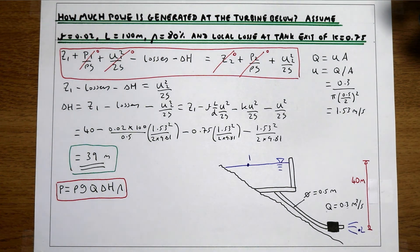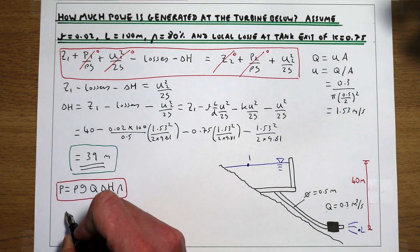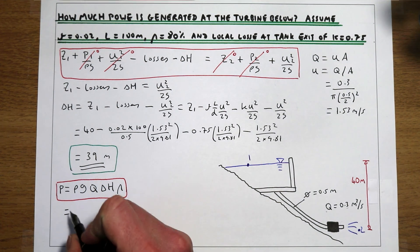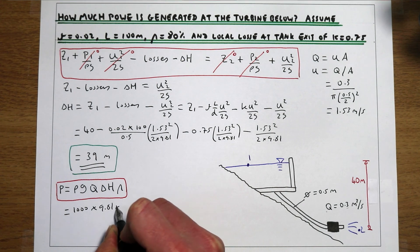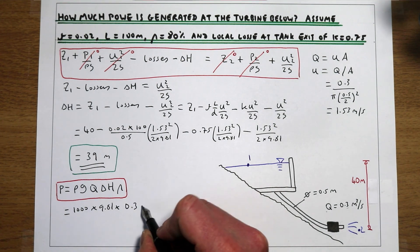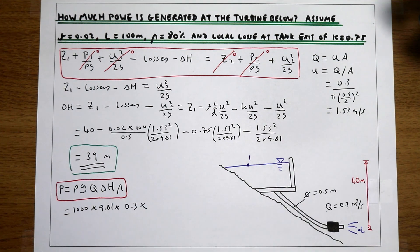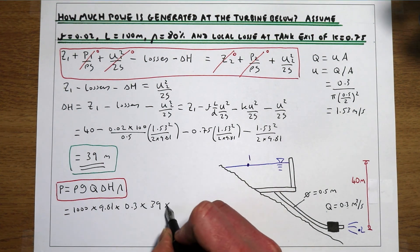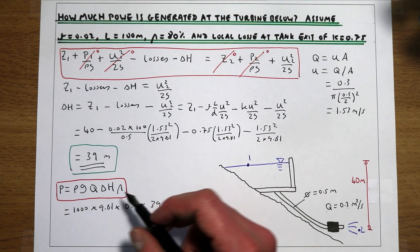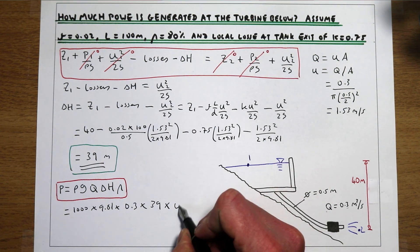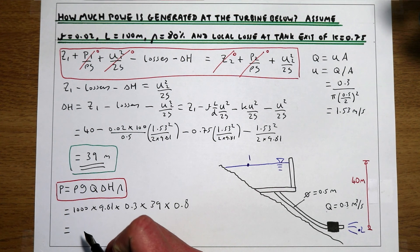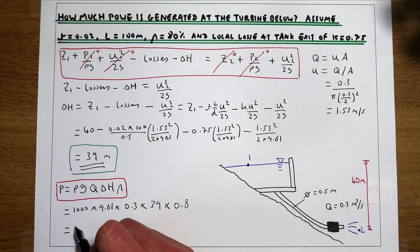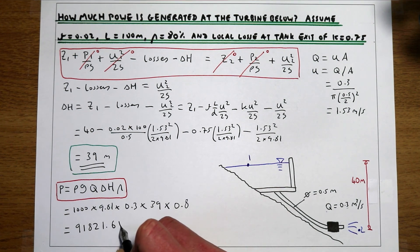Now we've worked out how much energy the turbine has extracted from the system, we can plug that number into the turbine equation. Density of water is 1000, gravity is 9.81, the system is flowing at 0.3 metres cubed per second, the energy extracted is 39 metres, and the efficiency of the turbine is 80% — so our efficiency coefficient is 0.8. That gives us a final power generated by this turbine of 91,821.6 watts.